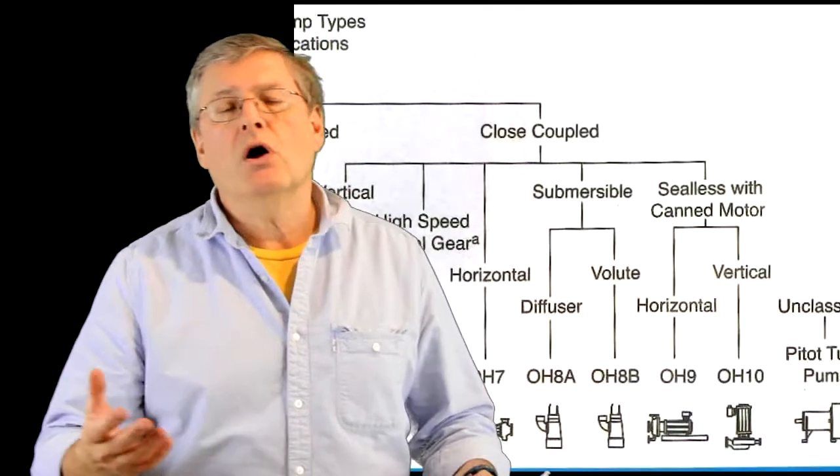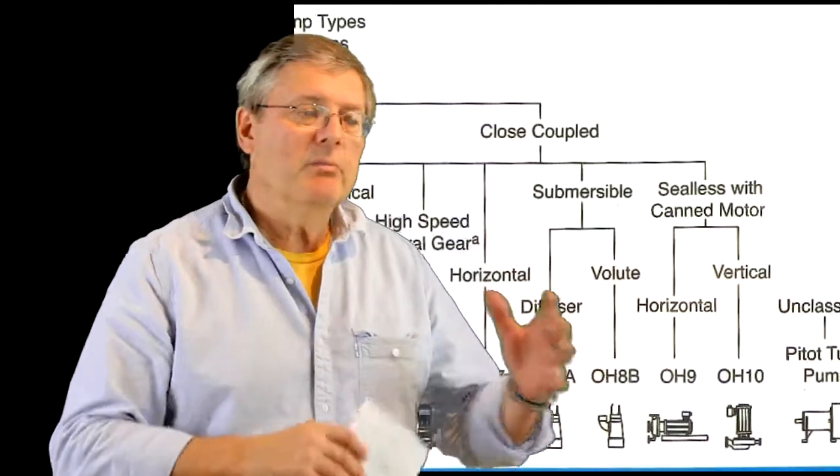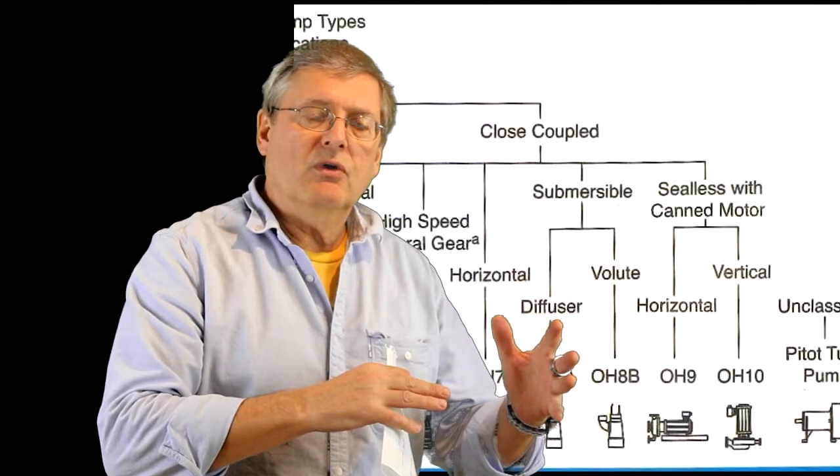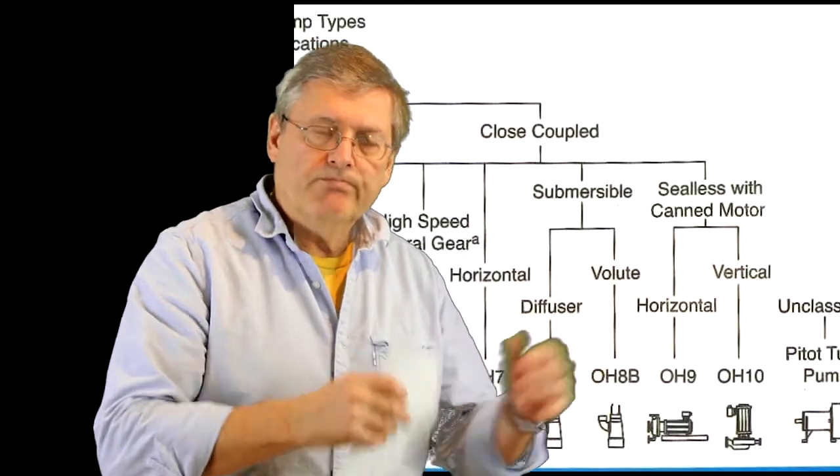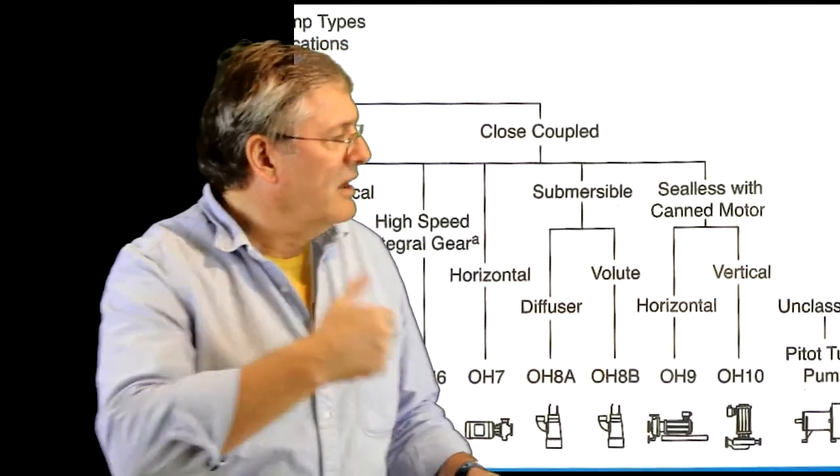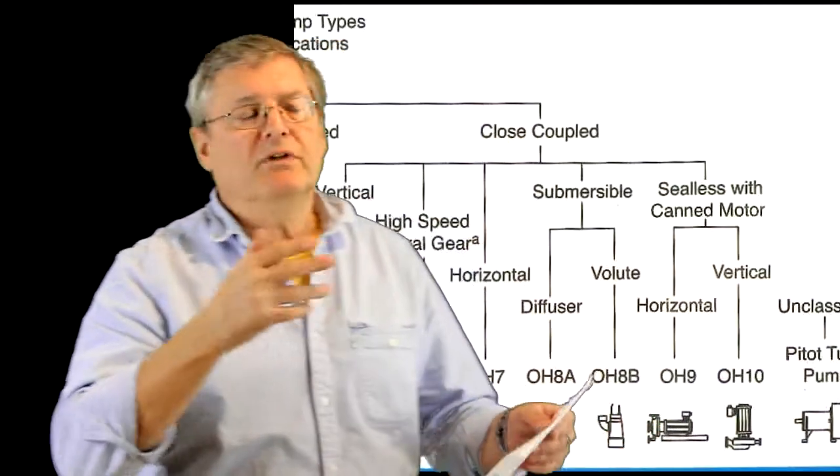Overhung meaning that the impeller hangs off the end of a shaft. So there's one through all the way up to OH7, 8, 9, whatever.